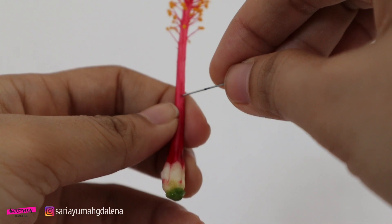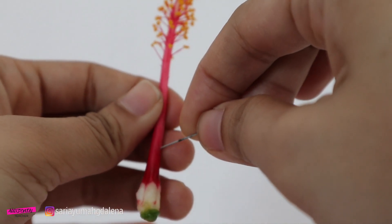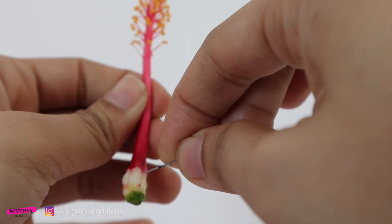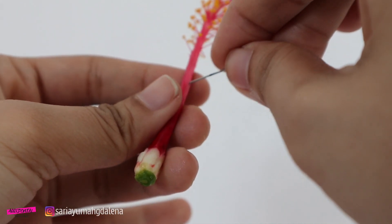Now we are going to observe the ovary. The ovary is inside the style. The style raises the stigma to increase the flower's chances of pollination.